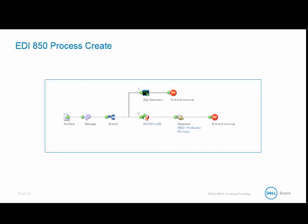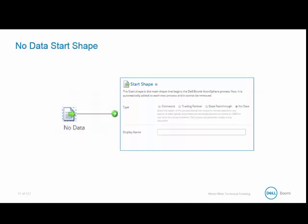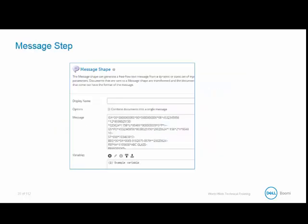This is the process we're going to be using in this class. Our 850 EDI data is contained in the message shape. It will then move down branch one, where it will delete the existing PO data from the database, allowing only the latest data in the database. We will then load the data into a profile, map it, and write it to our database. The process begins with the start shape, which has a no-data option selected because it's not receiving data from any source — it expects an empty document, and the data is received from the message shape. All EDI data in this section is populated in the message shape, which allows us to review the data on the fly.